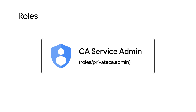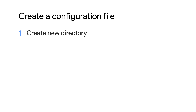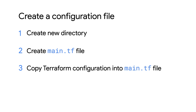Before getting started, make sure you have the CA service admin IAM role. First, you'll need to create a Terraform configuration file. To do that, you'll create a new directory for the project to live in. In the new directory, create a main.tf file for the Terraform configuration. Copy the Terraform configuration into that main.tf file.